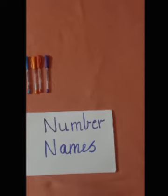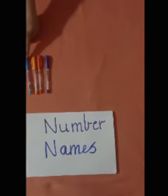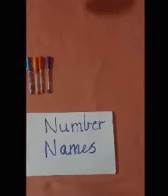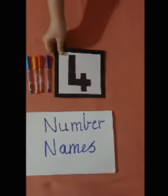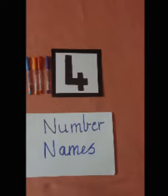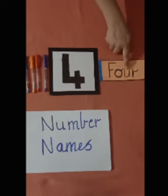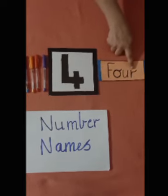Now we will count the glitter pens. 1, 2, 3 and 4. How many glitter pens I have? 4 glitter pens. And now let's see the name of number 4. F, O, U, R, 4.